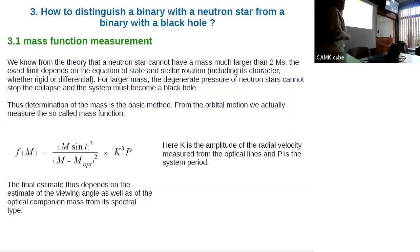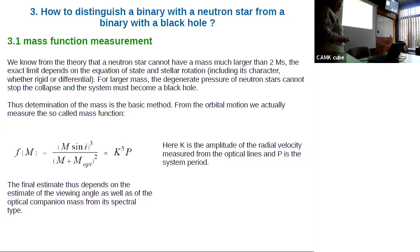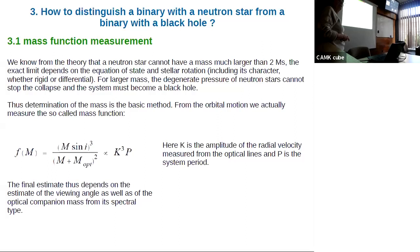A typical problem is distinguishing a black hole from a neutron star. The most basic method is mass measurement: from the equation of state, a neutron star cannot have a mass much larger than two solar masses. If you measure the orbital motion from emission lines, you measure the period and radial velocity amplitude, but unfortunately this gives only the mass function — not the mass of the central source — because the companion mass and the viewing angle also enter. The exact mass limit also depends on the equation of state and rotation.